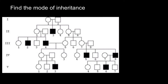Hello and welcome to Nikolai's genetics lessons. Today's problem is going to be to find the mode of inheritance looking at this pedigree. Mode of inheritance can be whether this is autosomal recessive, autosomal dominant, X-linked recessive, X-linked dominant, Y-chromosome linked, or mitochondrial linked genetic disorder.